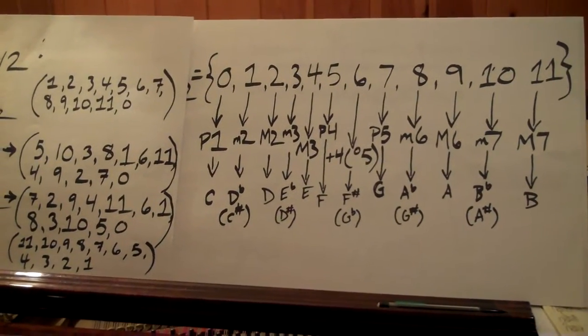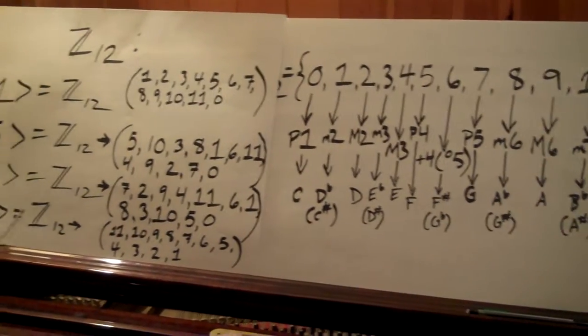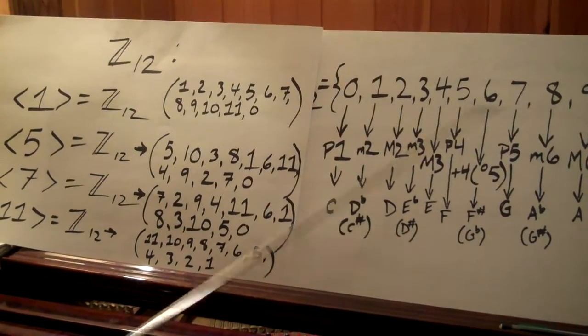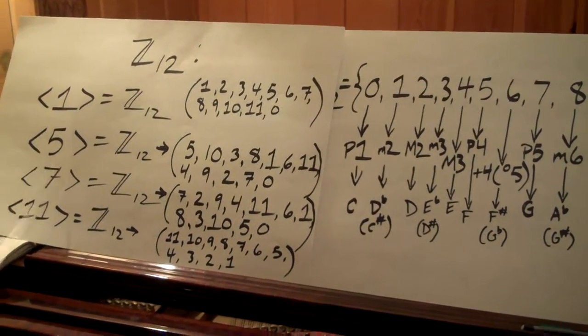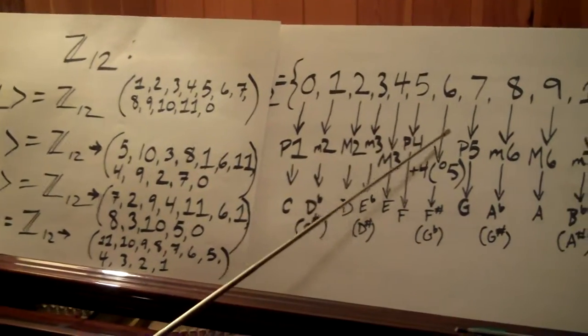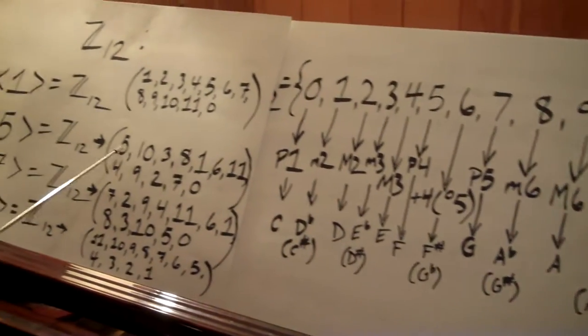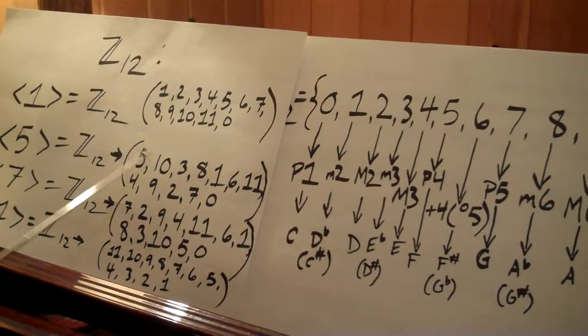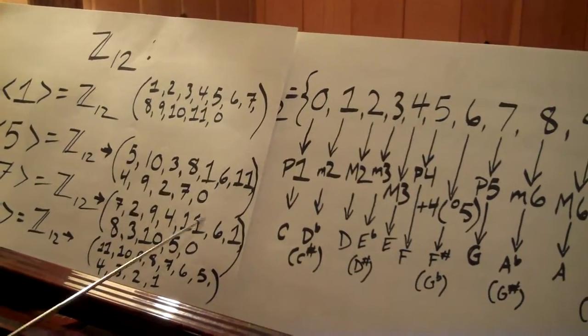We're basically ascending chromatically or descending chromatically using these as generator elements. What's really interesting is when we look at the other two generator elements, 5 and 7. What these represent are the perfect 4th and perfect 5th, respectively. So basically, these are the circle of 5ths and its inverse, which is the circle of 4ths.